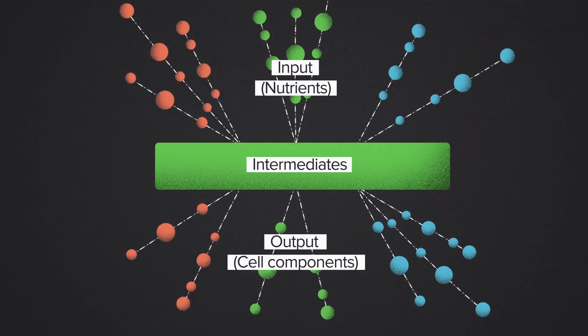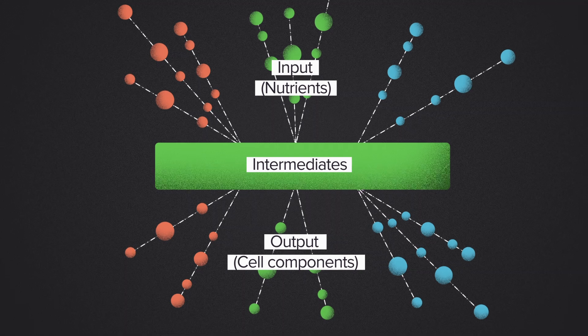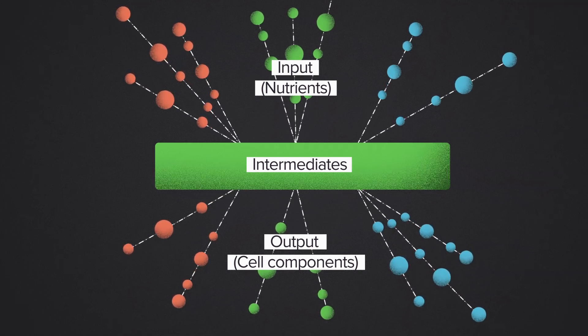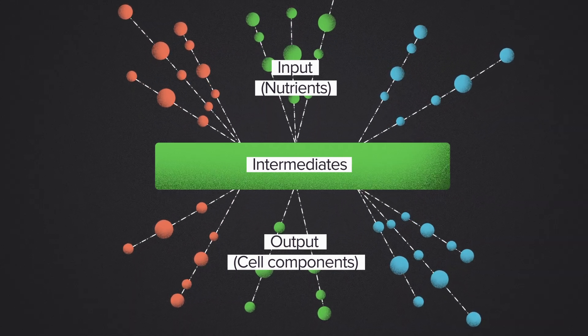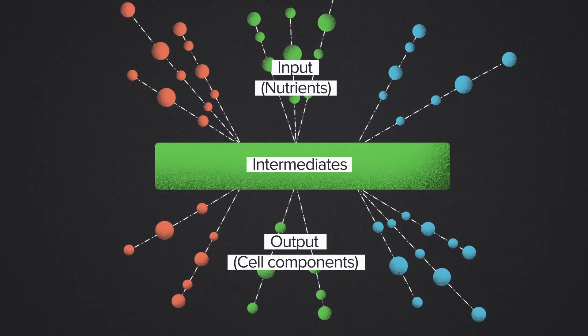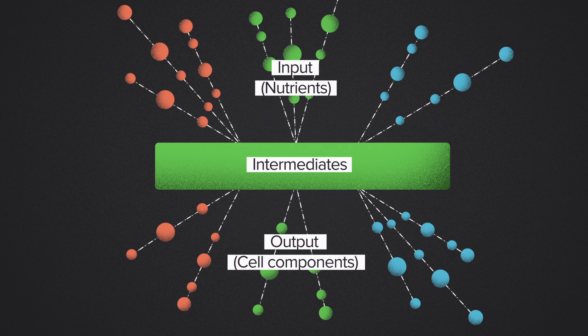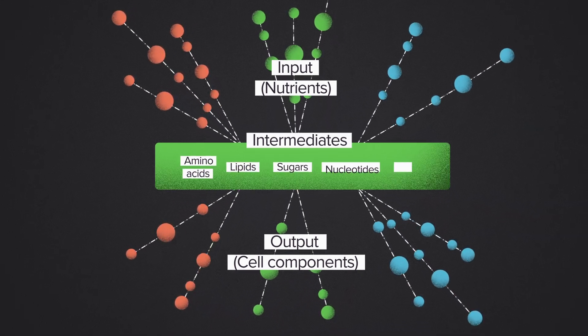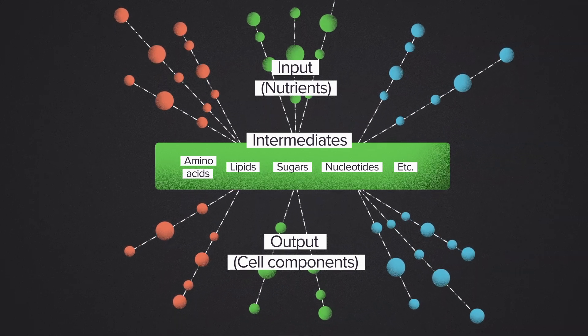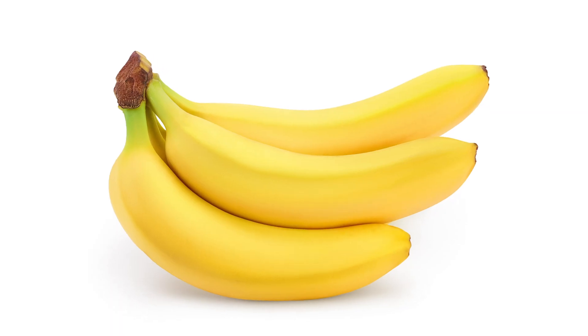Instead, naturally occurring metabolic networks have what's called a bow tie structure. They're wide on top, narrow in the middle, and wide on the bottom. The many input nutrients are broken down into a relatively small set of common intermediates. These intermediate building blocks are probably the most famous molecules of biology: sugars, lipids, amino acids, nucleotides. The metabolic outputs are built up using these building blocks as the source material. Not every metabolic pathway follows this structure — this is biology, so of course there are exceptions — but it is remarkable how common the bow tie pattern is and how stable it is across evolution. Every organism, as far as I know, solves the metabolic processing problem with a bow tie structure. It works for E. coli, the banana tree, and the slow loris.